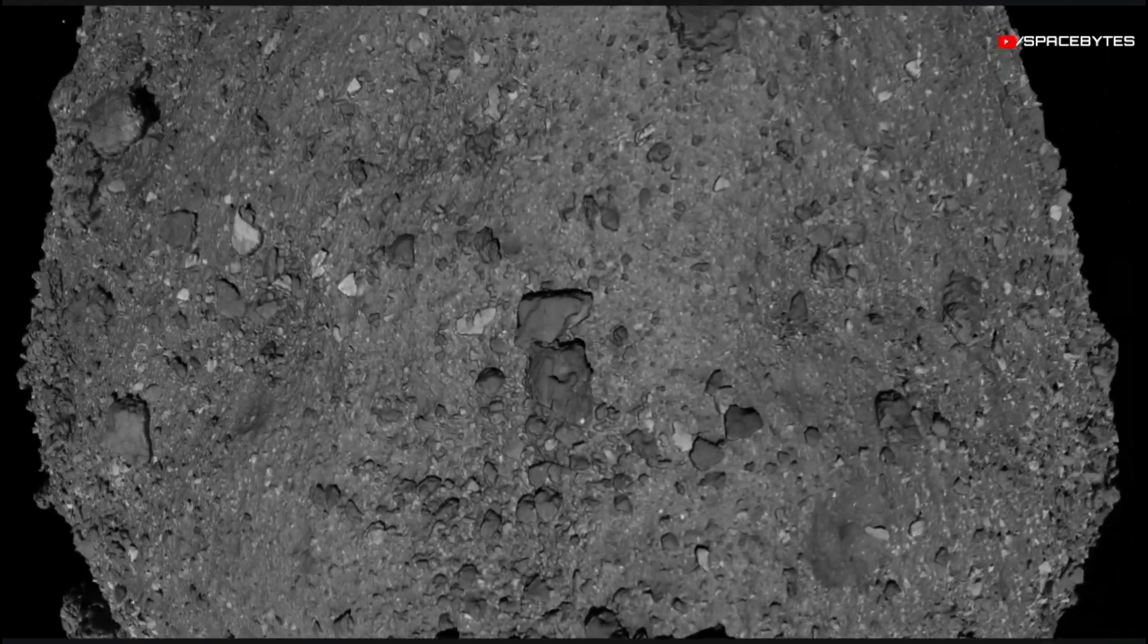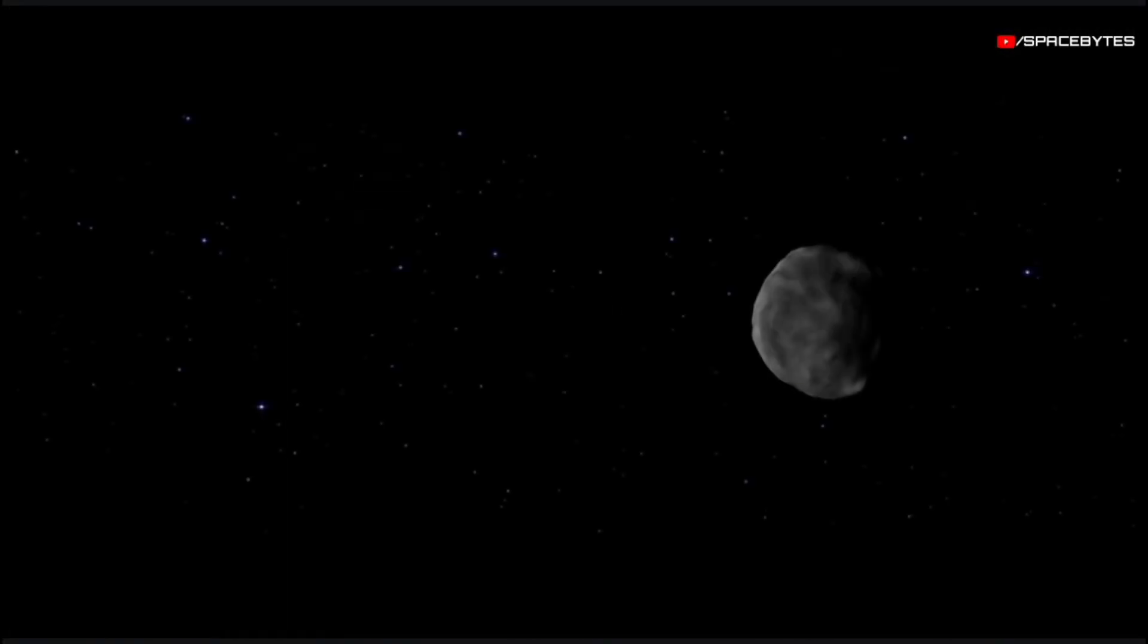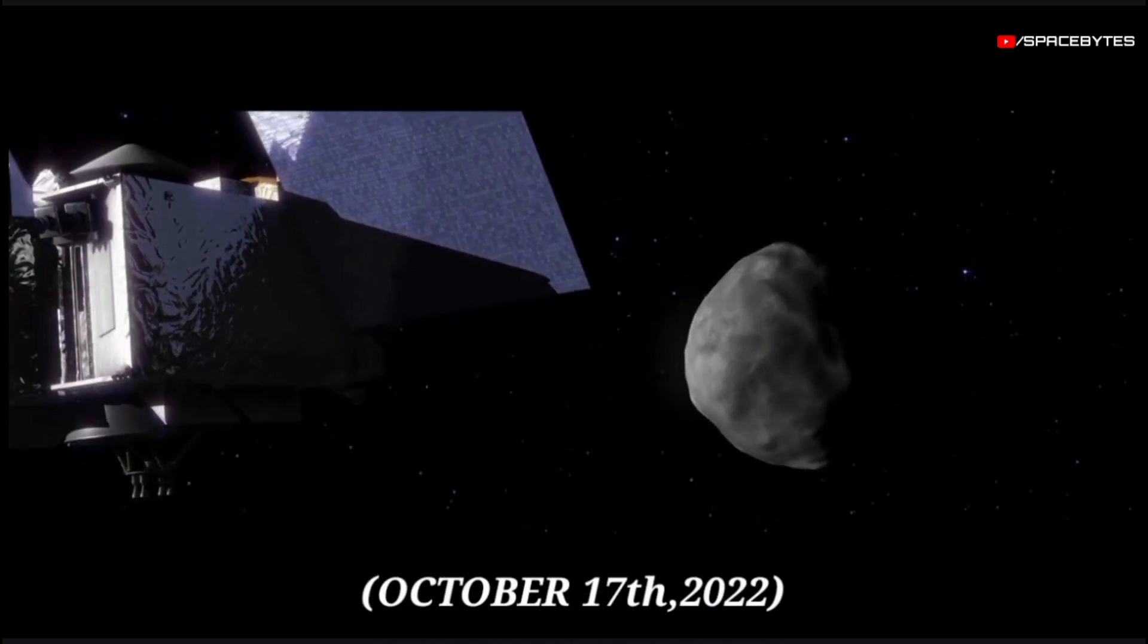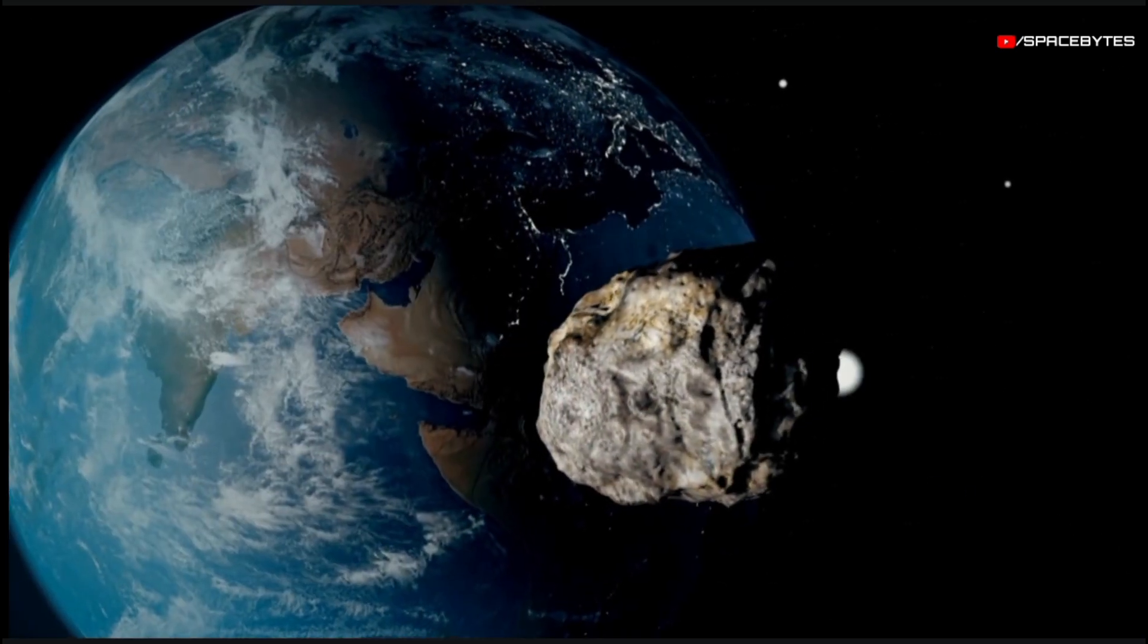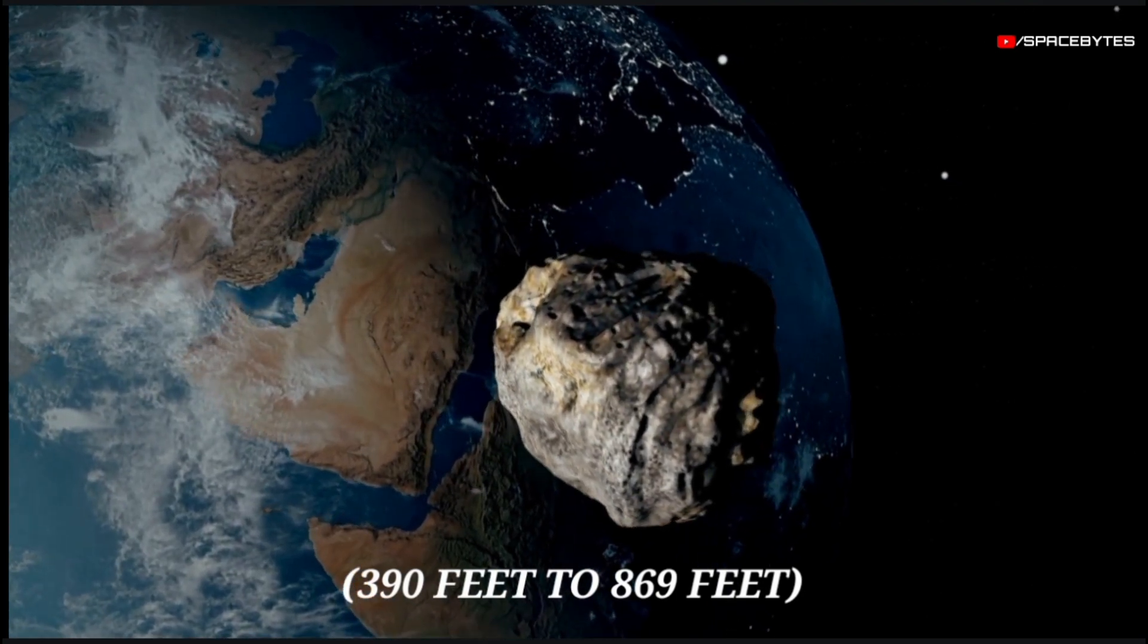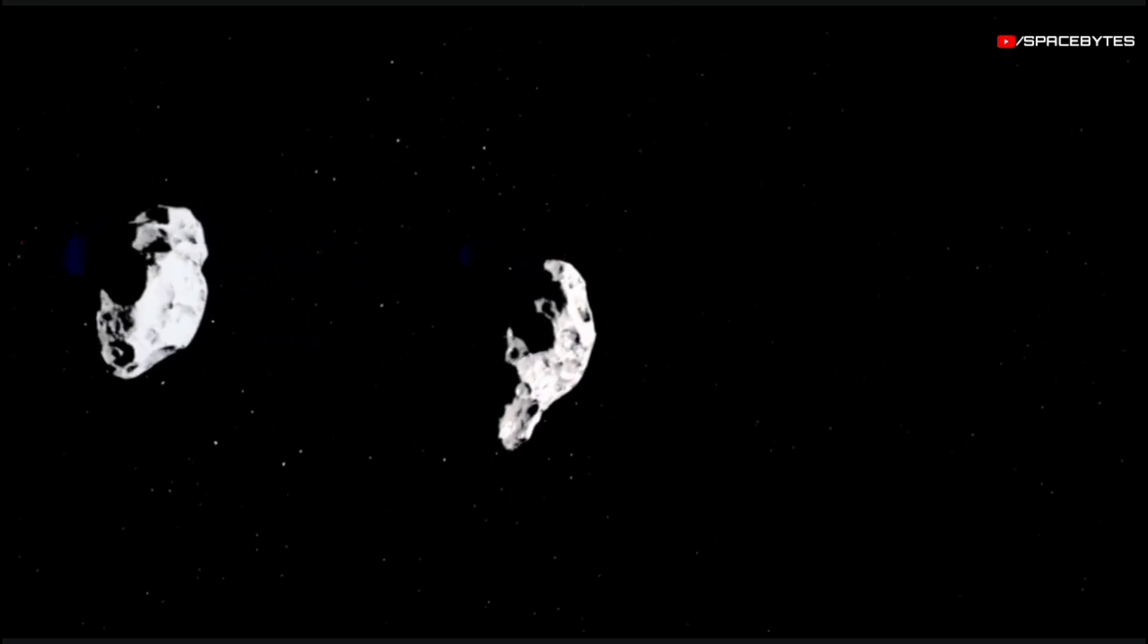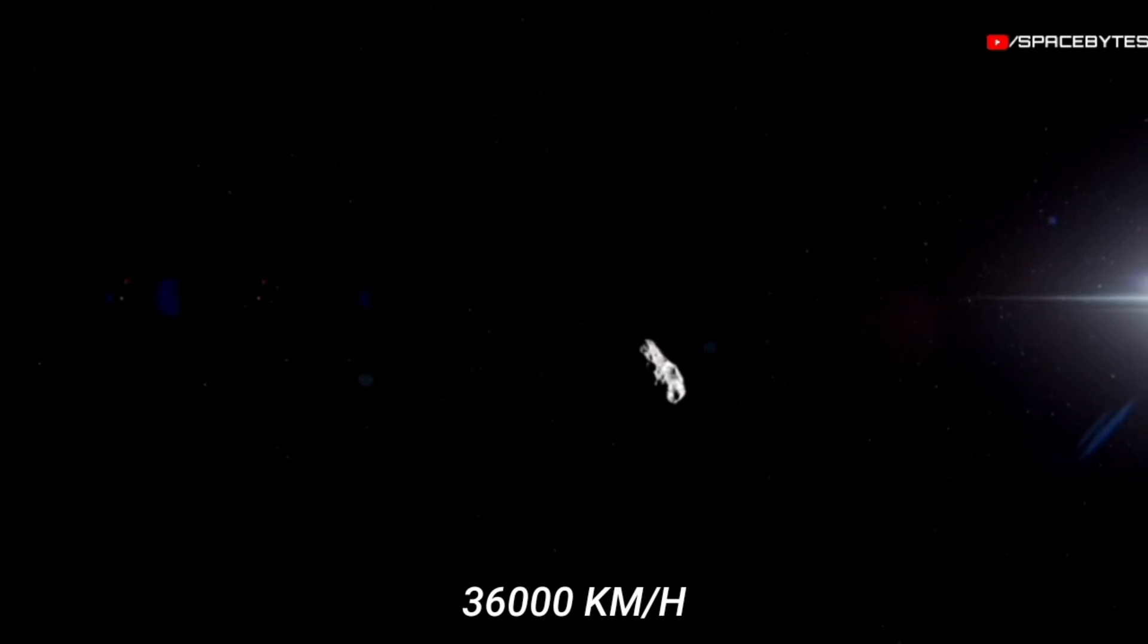The third huge asteroid crossing on December 24th is 2022 UD9. The asteroid 2022 UD9 was discovered on October 17th, 2022. It is a potential hazard near-Earth object. Its size is estimated in the range from 390 feet to 869 feet. The asteroid 2022 UD9 will pass past Earth on December 22nd at a distance of 1.78 million kilometers at a speed of 36,000 kilometers per hour.